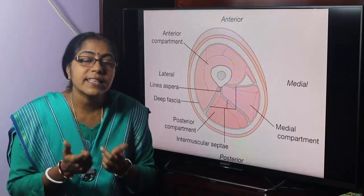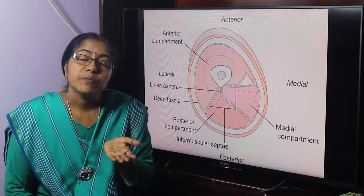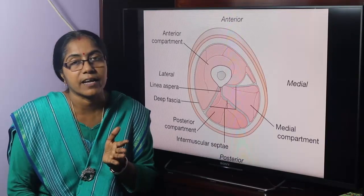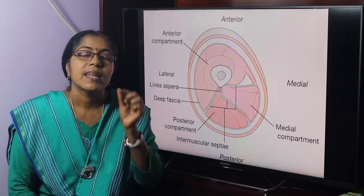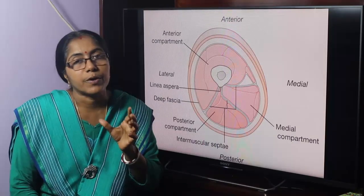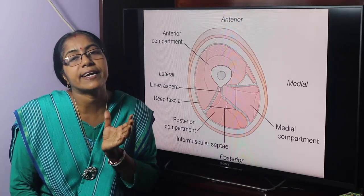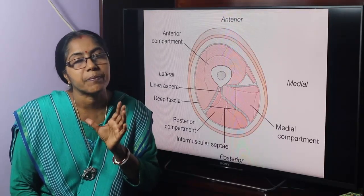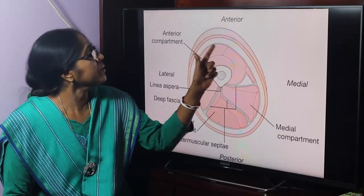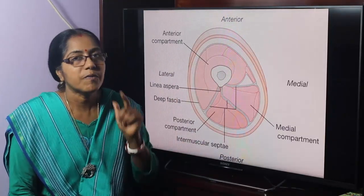The entire thigh is enclosed in a sleeve of deep fascia. The deep fascia of the thigh is termed as fascia lata. Lata is a Greek word meaning broad. The fascia's attachment is broad and it encloses the entire thigh in a fascial sleeve. So it is termed as fascia lata — the deep fascia of the thigh.